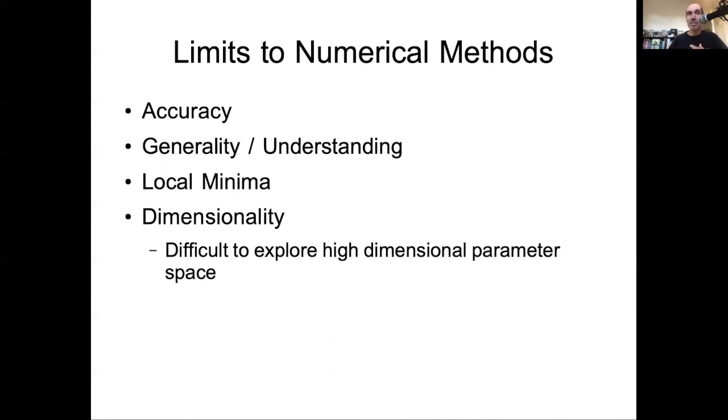And there is this challenge of dimensionality. If you're walking in a one dimensional surface, it's not hard to find the bottom. If you're walking in a two dimensional surface, it's harder to find the bottom, but it's not hard. If you're walking in an n-dimensional surface where you're trying to find the minima in a 27 dimensional space, there's a lot more room to get lost. And so it gets harder and harder to explore things numerically when the number of parameters you're trying to optimize goes up.